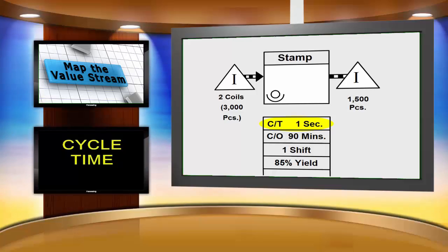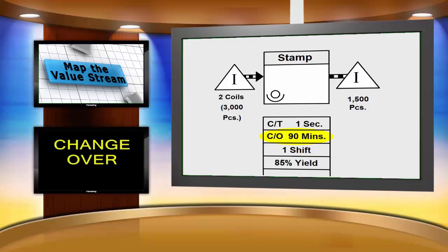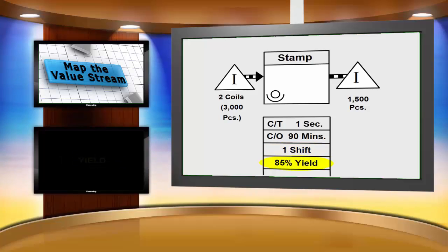Cycle time specifies how frequently an item or product is completed by a process, measured by direct observation. It also means the time it takes the operator to go through all of his or her work elements before repeating them. Changeover is when a piece of equipment has to stop producing in order to be fitted for producing a different item — for example, installation of a different processing tool in a metalworking machine, a different color paint in a painting system, a new plastic resin and mold in an injection molding machine, or loading different software. Changeover time specifies how long this takes. The third piece of information tells us we are running one shift. The yield tells us what percentage of material is being produced into a usable product — whatever is left over is discarded, generally referred to as scrap.